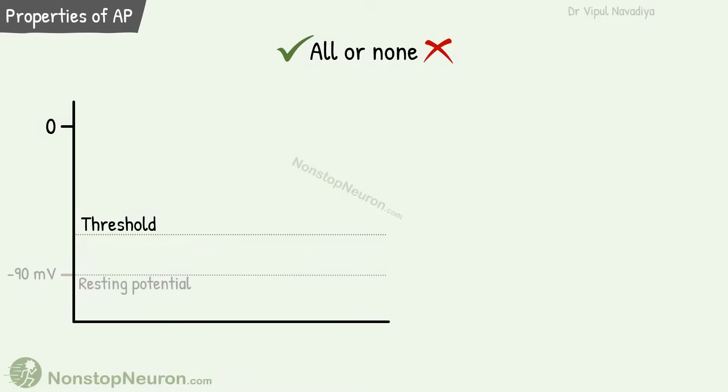Few more points. Action potential is an all or none phenomenon. That is it either occurs fully or not at all. There is no mid-ground. The deciding factor is the threshold. It's about minus 55 mV. If a stimulus can take the voltage up to the threshold, an action potential occurs fully.